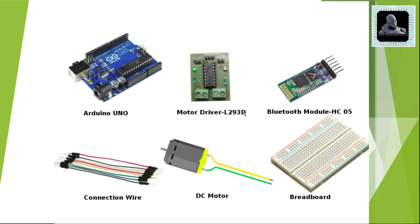Now let me move to the components required. As we have already seen in the block diagram, we need an Arduino Uno, the motor driver L293D, Bluetooth module HC05, and two DC motors. Apart from that, we need connection wires as well as breadboards to interconnect all these components. You can purchase all these components from third-party vendors like Amazon, eBay, etc.